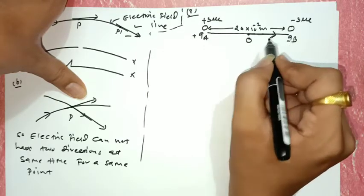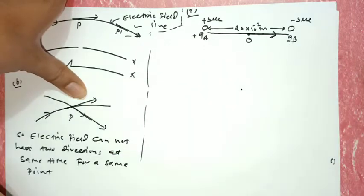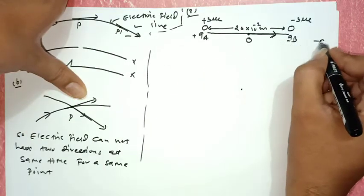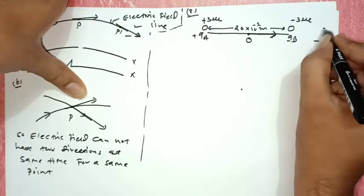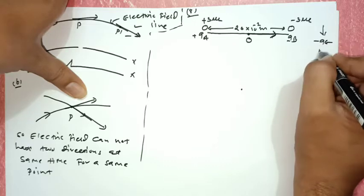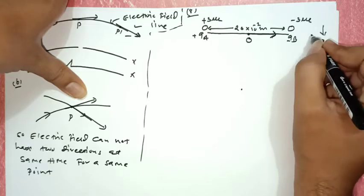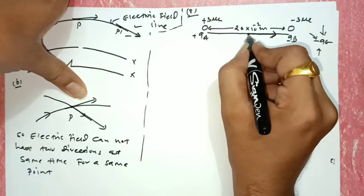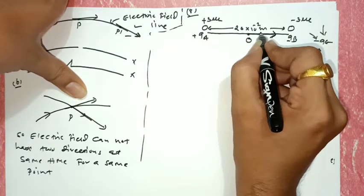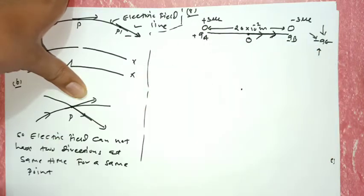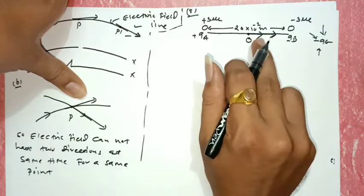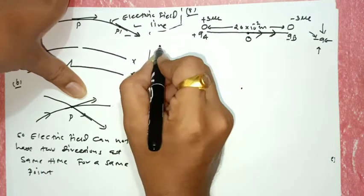The electric field will be in this direction. A negative charge particle का electric field उसके अंदर जाता है - the electric field of a negative charge goes inward toward it. So both electric fields are in the same direction - they add up.